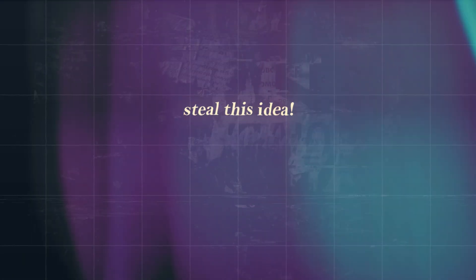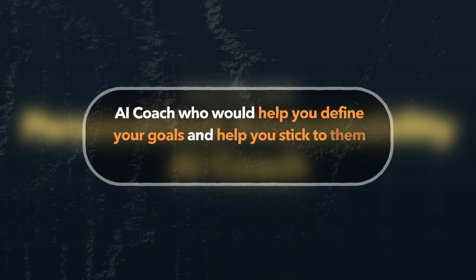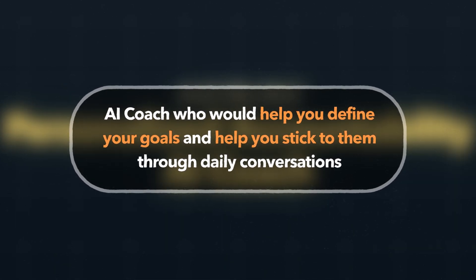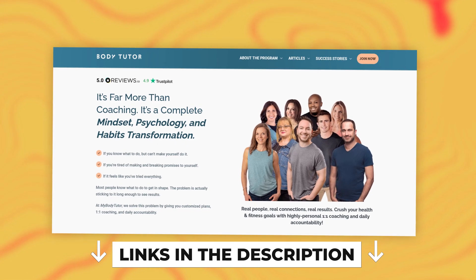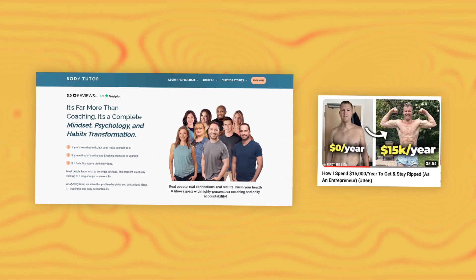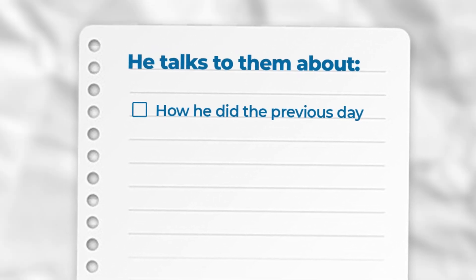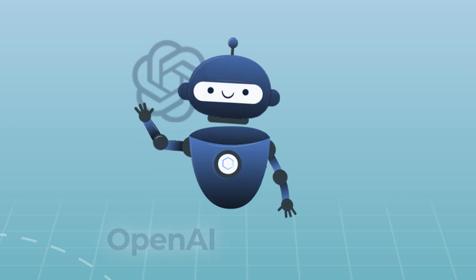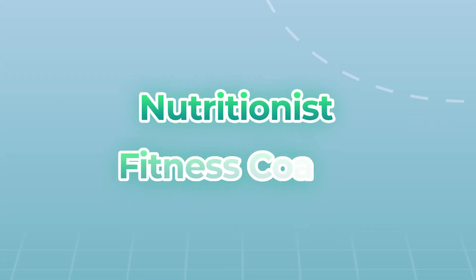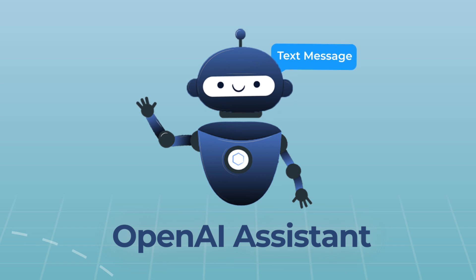The fifth and final idea that you should steal is going to be an AI accountability coach. The way this coach would work is it would help you define your goals and help you stick to them through daily conversations and text messages. The best way to describe this idea is to talk about an existing accountability coaching business called My Body Tutor. I found out about this business through the My First Million podcast, where Sam Parr talks about how he pays them $600 a month for a daily call with a nutritionist who helps him reach his desired physique. Every day he'll talk to them about how he did the previous day, what went wrong, and what he needs to do today to make sure he hits his goal.